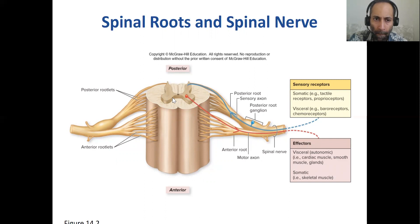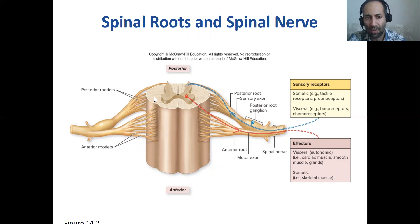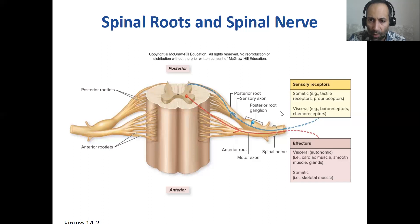Here are two nerves attaching to the spinal cord. They have a front arm, the anterior rootlet, and a back arm, the posterior rootlet. The posterior rootlet contains your sensory nerves. The sensory axons make their way to your spinal cord via the posterior root. The anterior root carries the motor nerve fibers from the spinal cord to the rest of the body.